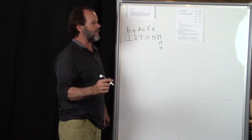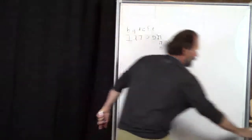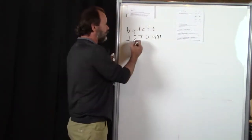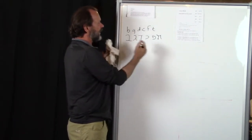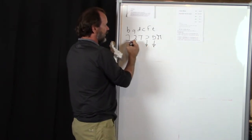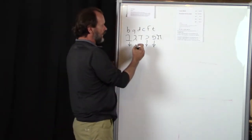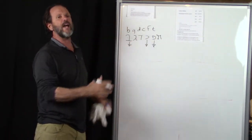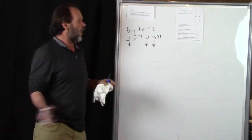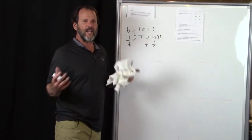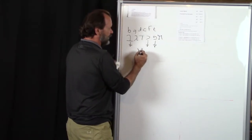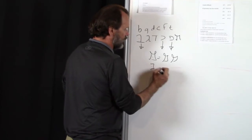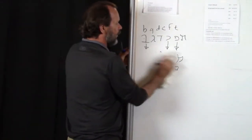Of these six Begadkephat letters — I mistakenly said five last time and forgot the gimel — only three of them actually change their sound when they receive a dagesh. The others also get a dagesh but don't change their sound, and they don't behave like all the rest of the characters do with a dagesh. When any other character gets a dagesh — for example a mem — it means it's doubled, it equals two mems.